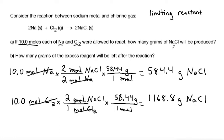So what this is telling me is that if all of my Cl2 were to react, it would produce 1168.8 grams of NaCl. But if my sodium all reacts, it could only produce 584.4 grams of NaCl.